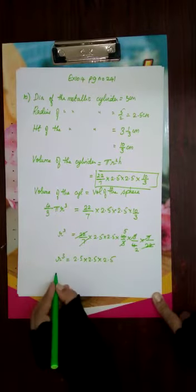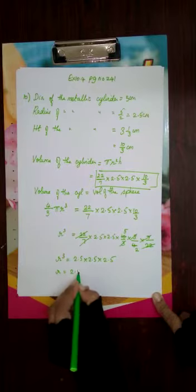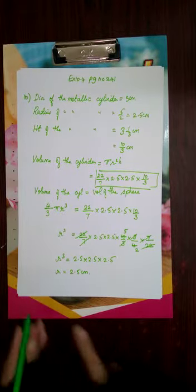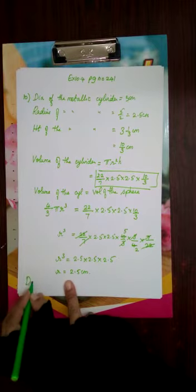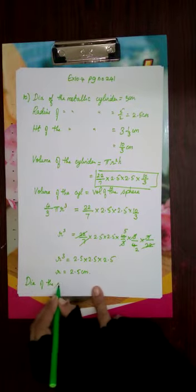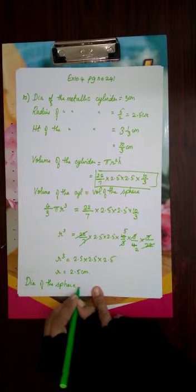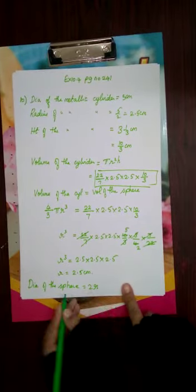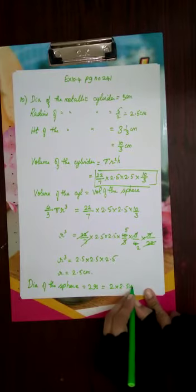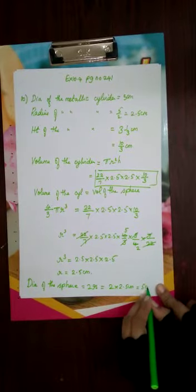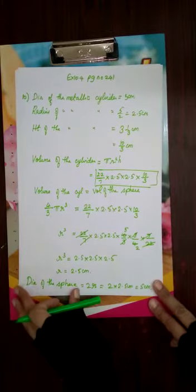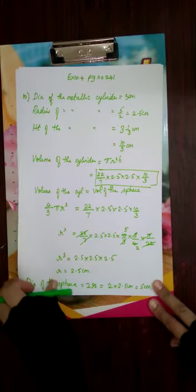Therefore r = 2.5 centimeter. They asked us to find the diameter of the sphere. Diameter of the sphere = 2r = 2 × 2.5 = 5 centimeter.